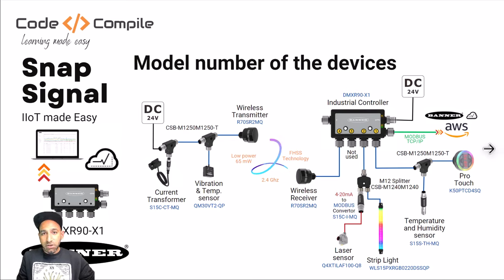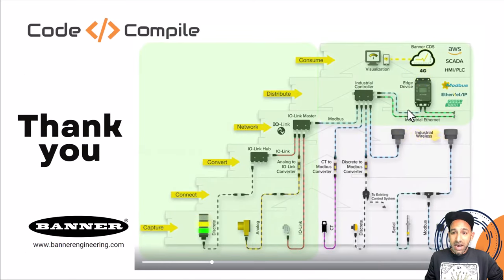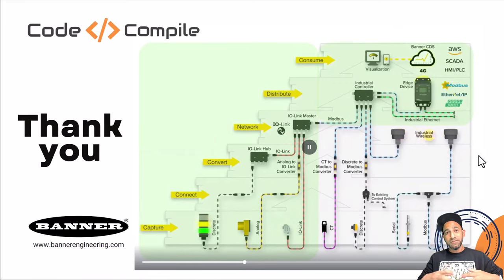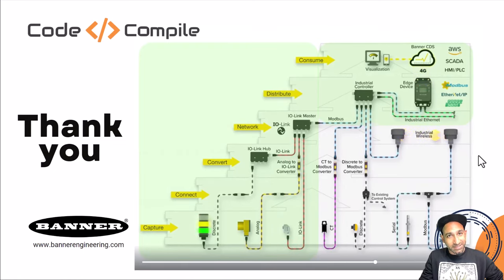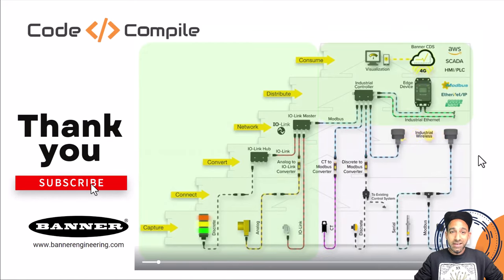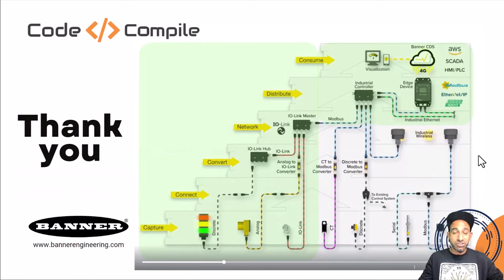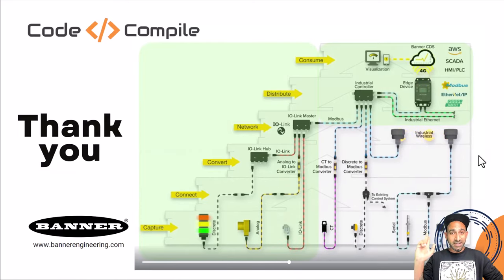That was all for today. Thank you for watching. In the next video, I'll be talking about IO-Link devices — how you can move IO-Link data to the cloud, or how you can convert raw signals from discrete and analog sensors into IO-Link. So in this video we saw Modbus; in the next video we'll talk about IO-Link. Subscribe to this channel so you get notifications about new videos to understand signal conversion in Industry 4.0. Thank you for watching, and I'll see you in the next video!